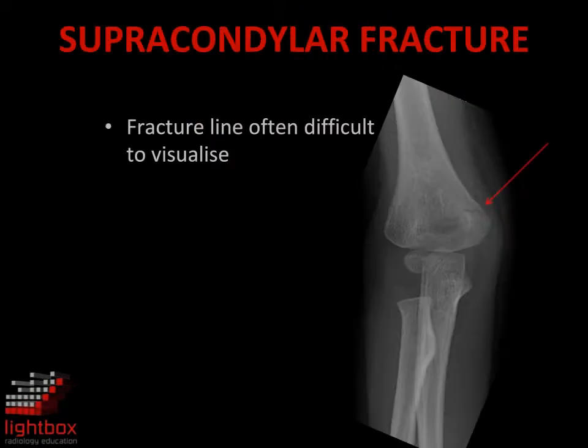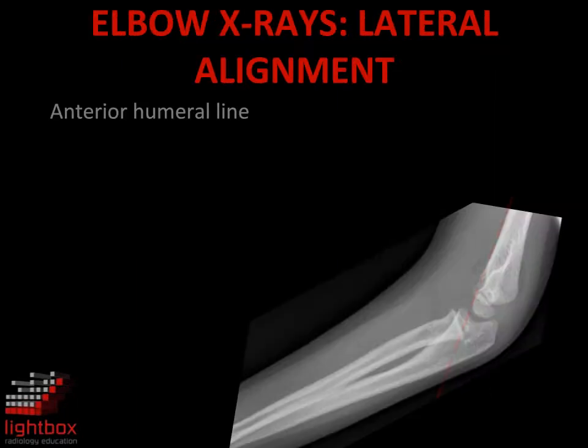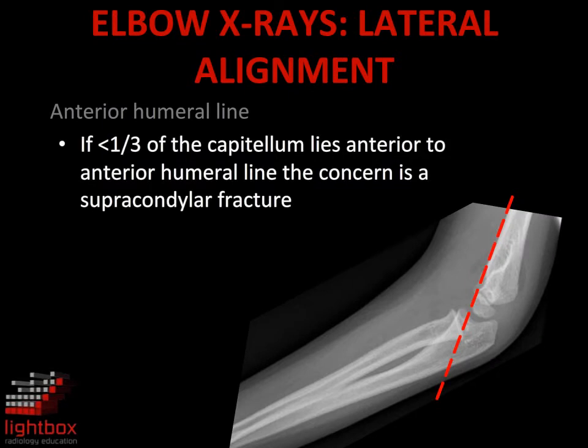Supracondylar fractures of the distal humerus are often difficult to visualise. Loss of the normal alignment, with less than one third of the capitellum anterior to the anterior humeral line, is often an important sign in the diagnosis of a supracondylar fracture with posterior displacement or angulation.